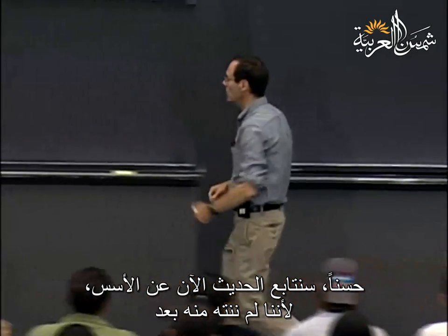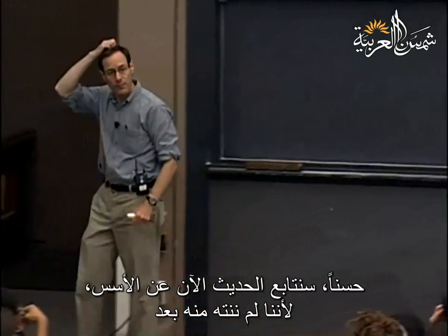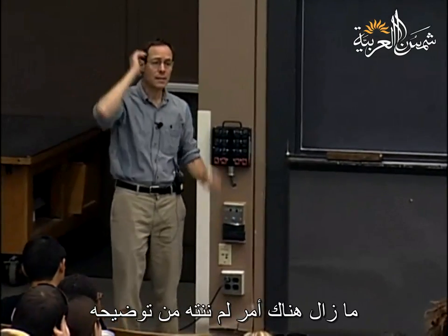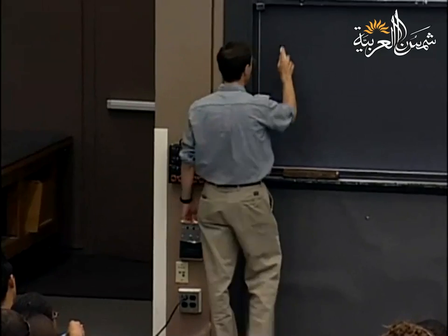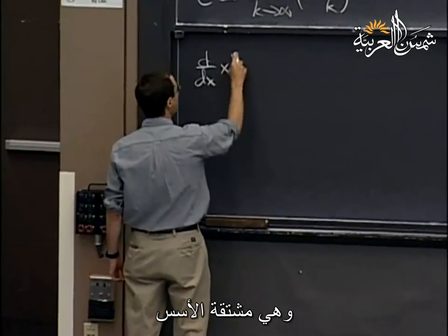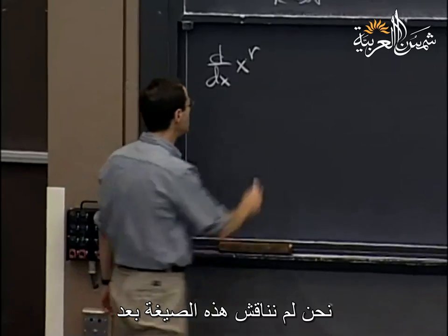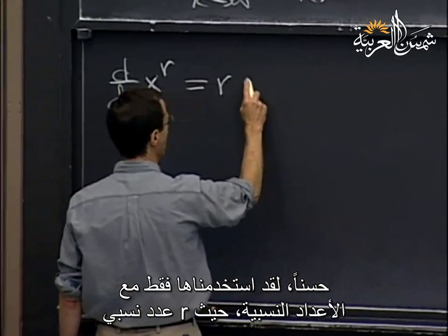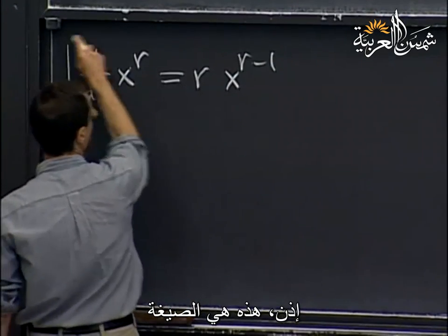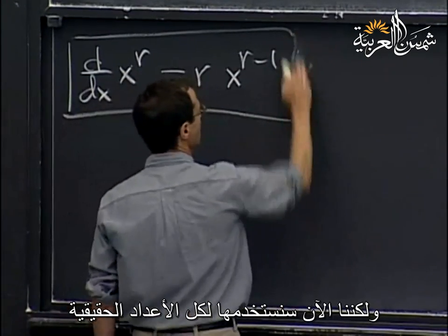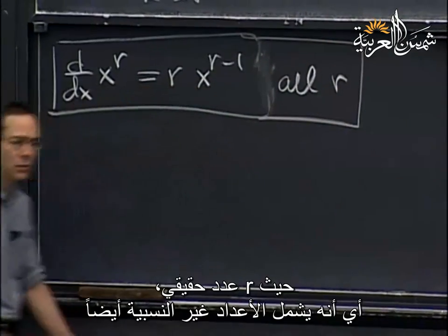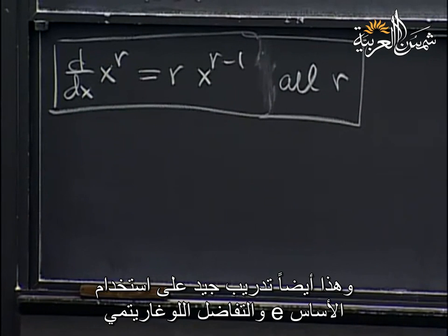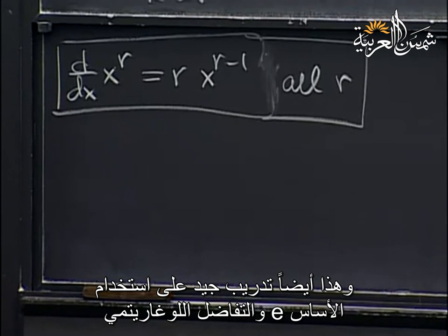I have one loose end I haven't covered yet — one very important formula that's left: the derivative of x to the power r. We did this for rational numbers r, but now let's check this for all real numbers r, including the irrationals. This is also good practice for using base e and using logarithmic differentiation. So let me do this by our two methods for handling exponential-type problems.